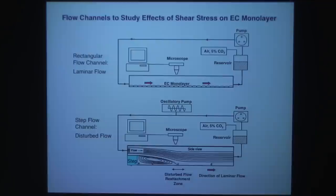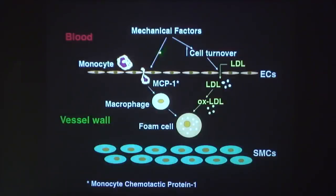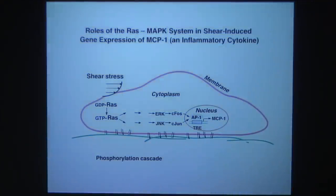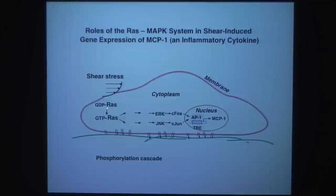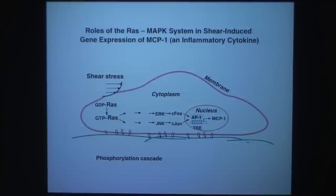We can use these devices to look at how mechanical factors affect monocyte entry as a result of MCP-1 activation, as well as cell turnover. MCP-1 is regulated by a phosphorylation cascade, similar to chemical stimulation by phorbol ester and other chemokines. Shear stress can activate the Ras system from GDP to the GTP-bound form, activating a phosphorylation cascade involving JNK, ERK, c-Fos, c-Jun, and AP-1, eventually causing secretion of MCP-1.